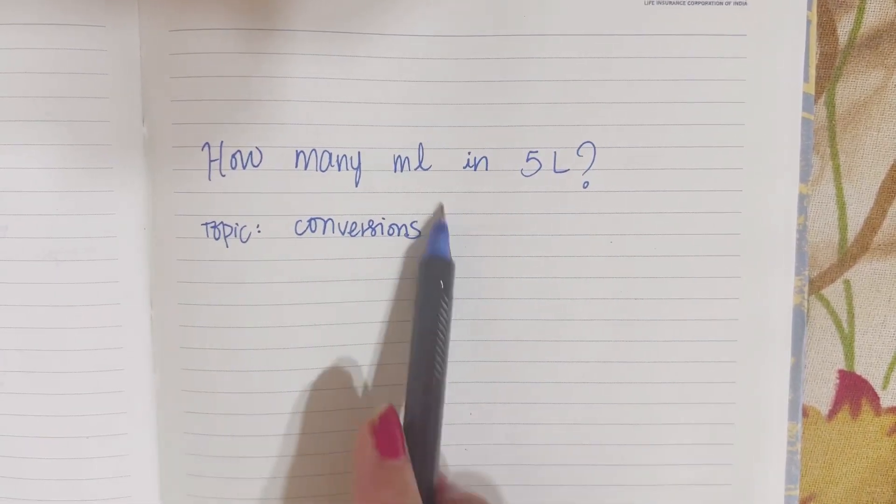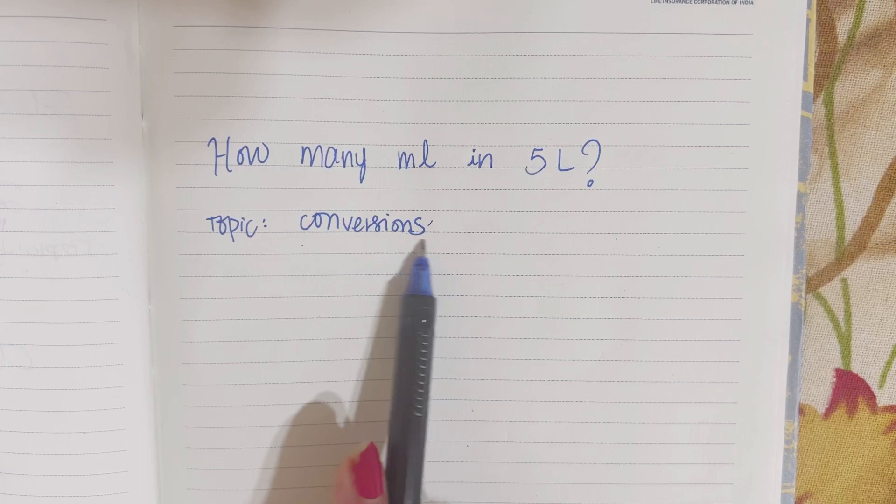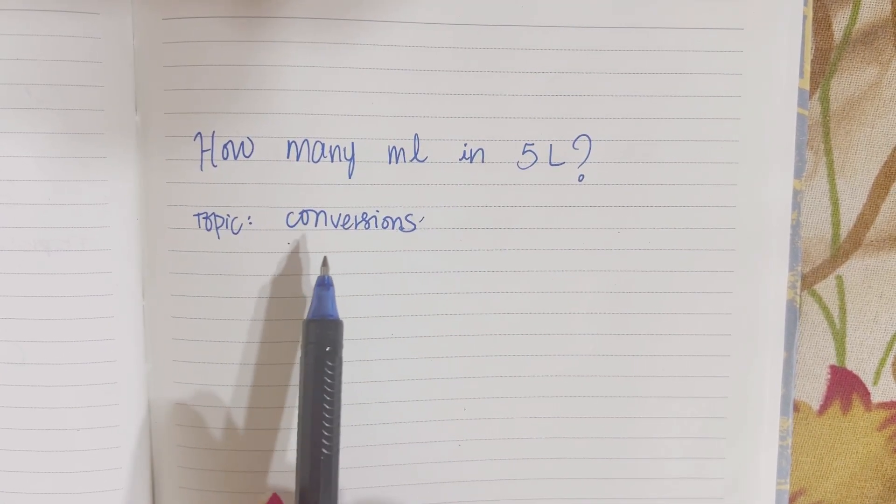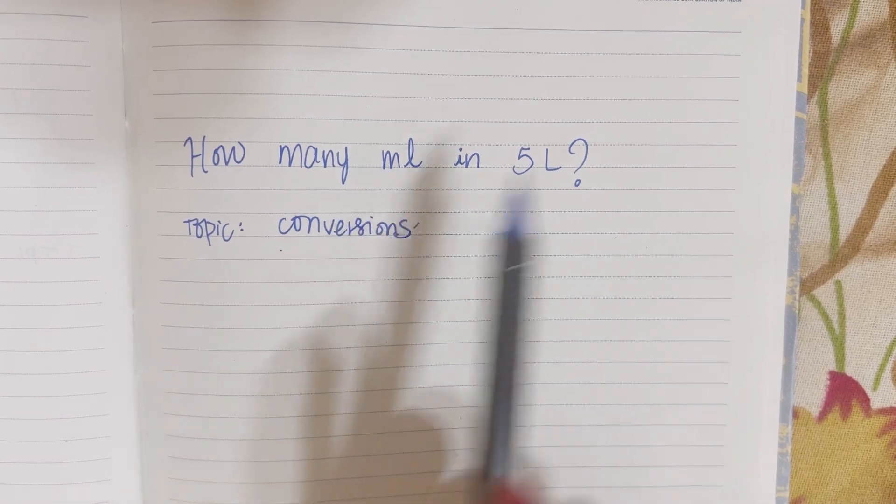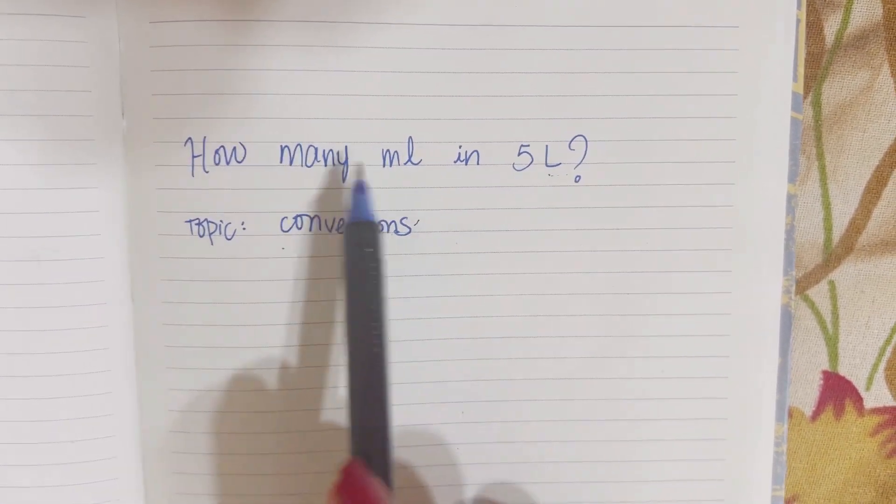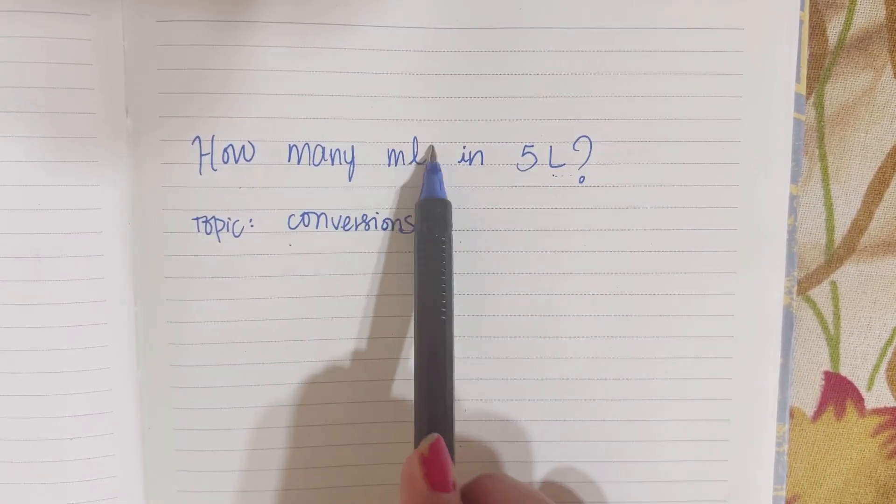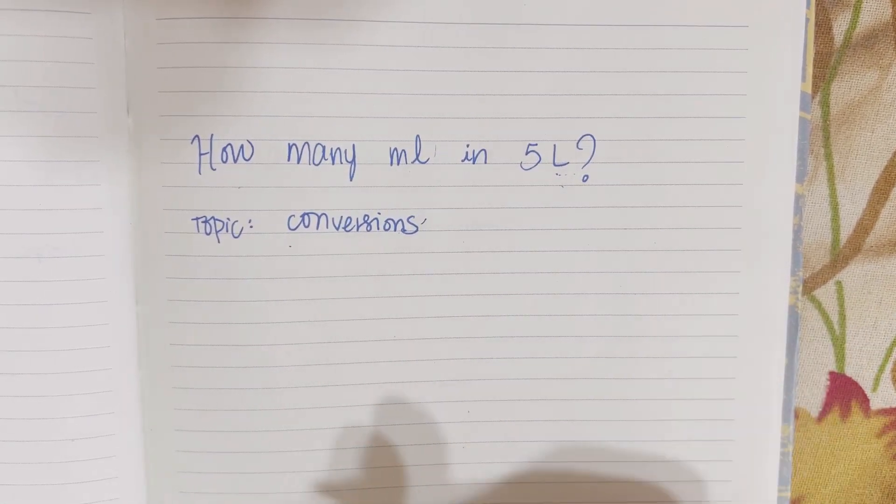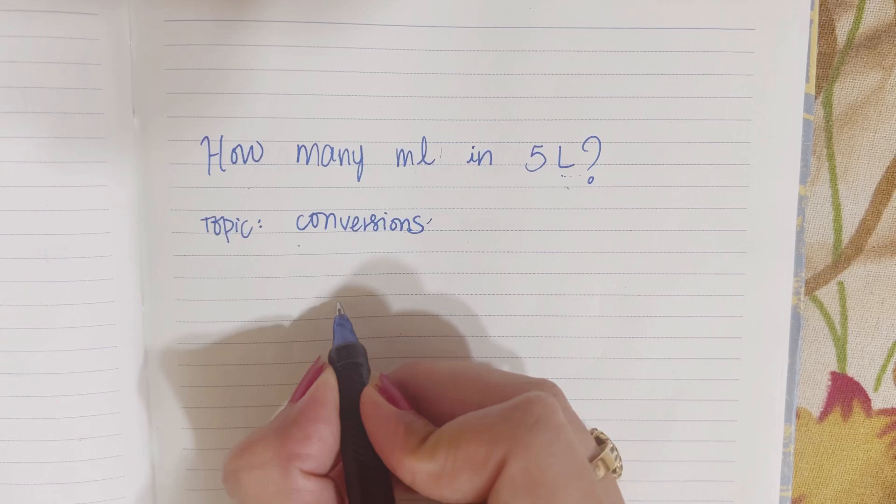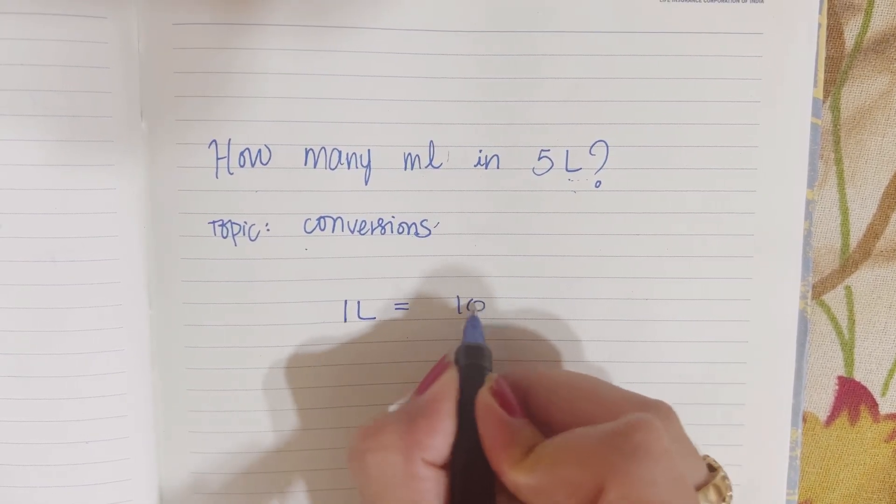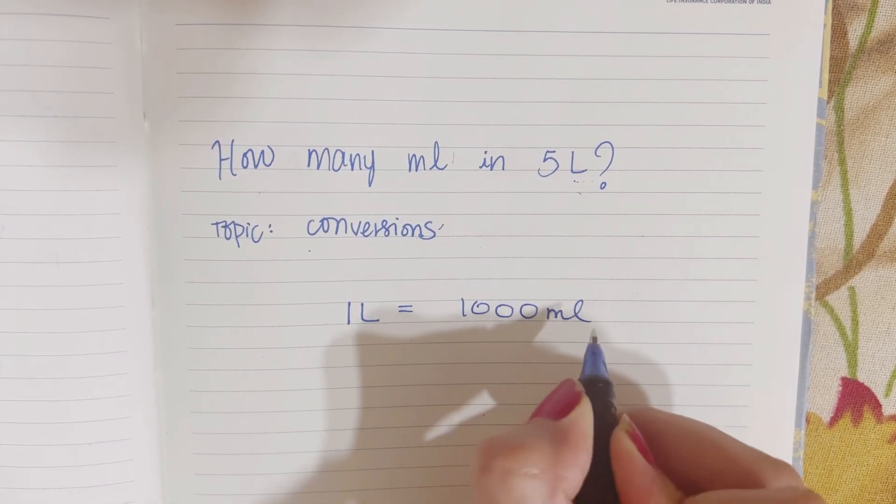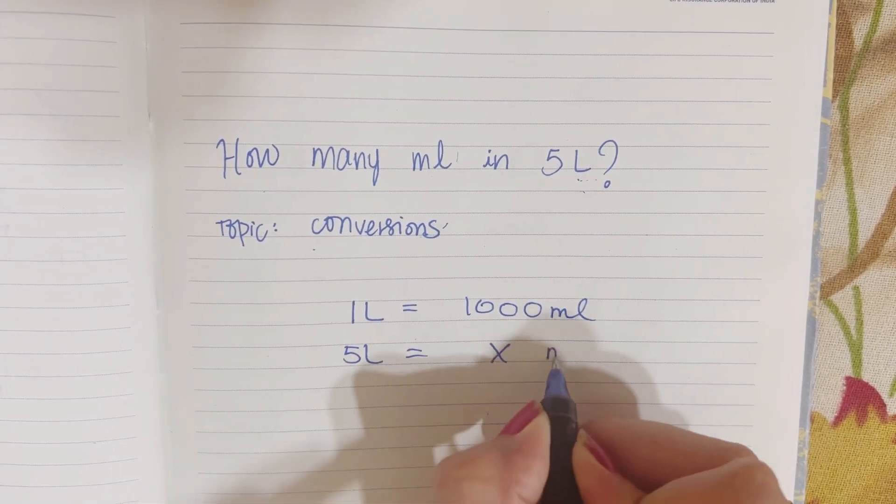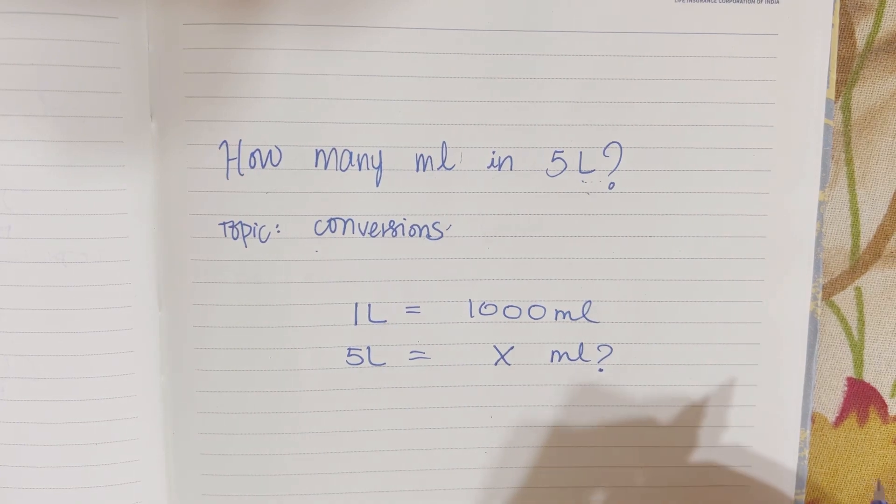The next problem is about conversions. You need to know all your conversions. I have a good video on that and all the conversions you need to learn for the HESI math portion. It says how many milliliters are in 5 liters. You need to know the conversion that 1 liter has 1,000 milliliters. So in 5 liters, how many mls do you have is the question.